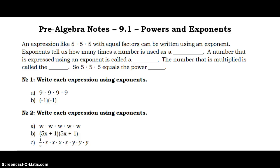Hello, pre-algebra students. We're ready for Chapter 9, Section 1, where we're going to talk about powers and exponents. An expression like 5 times 5 times 5 with equal factors can be written using an exponent. Exponents tell us how many times a number is used as a factor. A number that is expressed using an exponent is called a power.